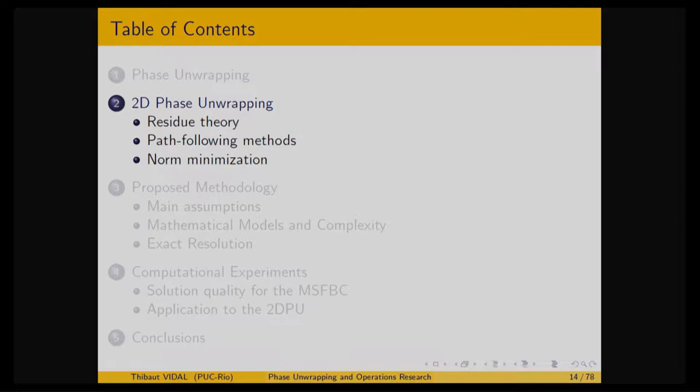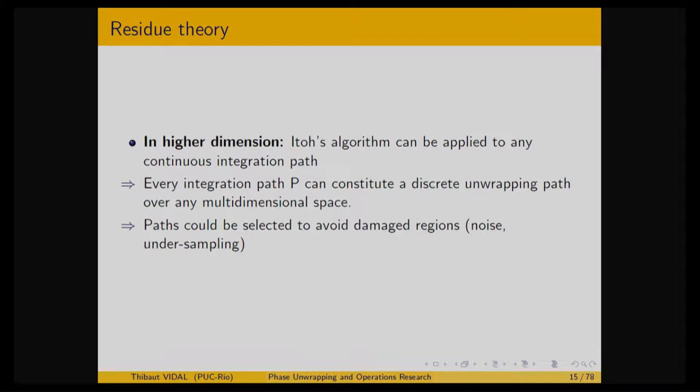In one dimension there is no additional information you can use. In two dimensions things are richer, because you can use any path to integrate your signal. You can apply the Ito algorithm on any path that covers your data. The idea is to integrate using paths that avoid points that have issues. The question is: can we detect where there is a problem in a 2D signal?